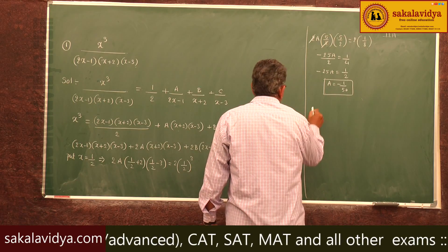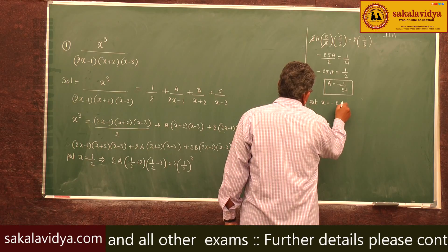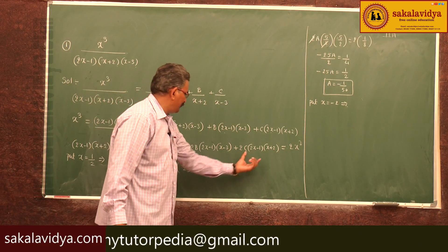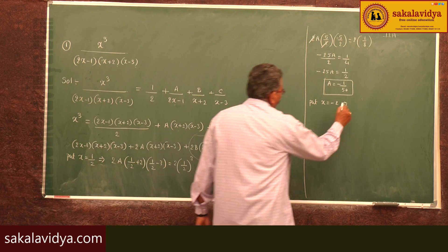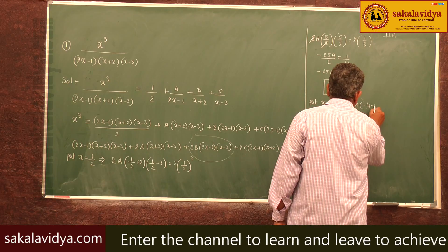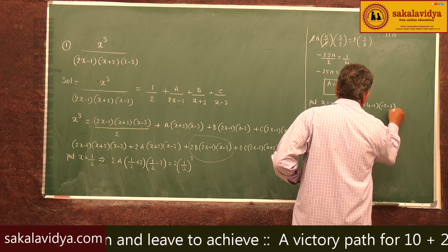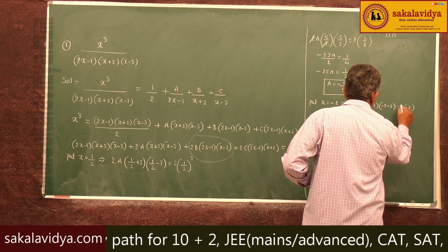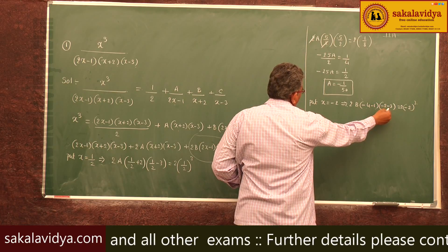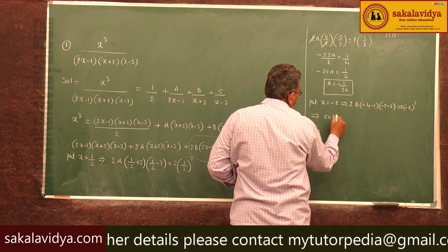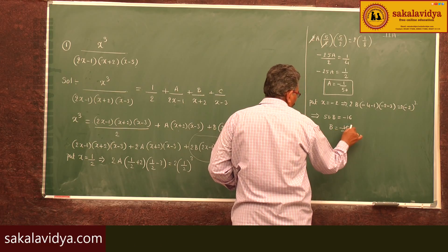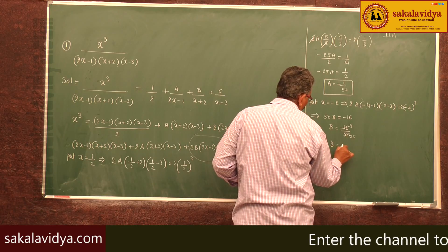Now put x = -2: the terms without B become 0. We get 2B·(-4-1)·(-2-3) = 2·(-2)³, which gives 2B·(-5)·(-5) = -16, so 50B = -16, therefore B = -8/25.